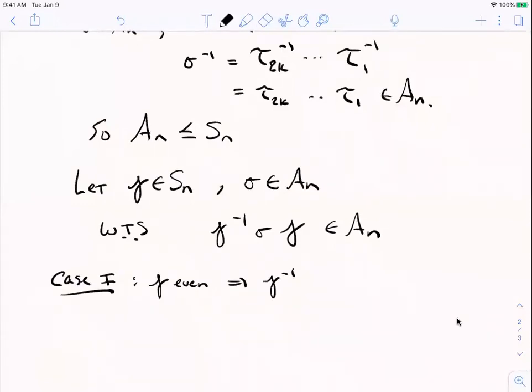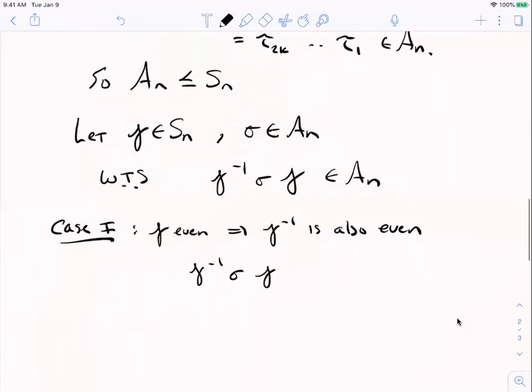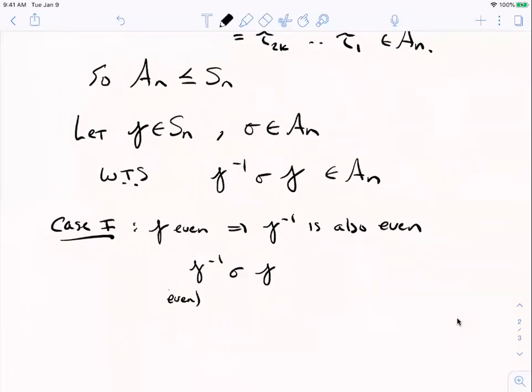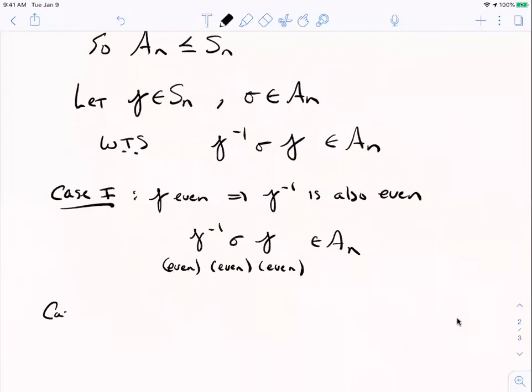So then when we look at gamma inverse, it's also even. We just proved that. So in this product, gamma inverse sigma gamma, we've got an even times an even times an even. Well, you add three even numbers together, the number of transpositions, that's going to be even. That's by our fact above. The second case is that gamma is odd. Okay?